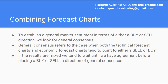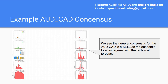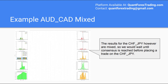To establish a general market sentiment in terms of either a buy or sell direction, we look for general consensus. General consensus refers to the case when both the technical forecast charts and economic forecast charts tend to point to either a sell or buy. If the results are mixed, we tend to wait until we have agreement before placing a trade in the direction of general consensus. For the AUD CAD, we can see the general consensus is a sell position when combining all the forecast charts. If our belief is the market is a sell, we would look for positive price movements to trade against as part of a basic reversal strategy. The results for the CHF Yen, however, are mixed, so we would wait until consensus is reached before placing a trade on the CHF Yen.